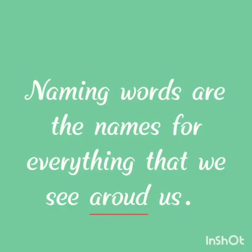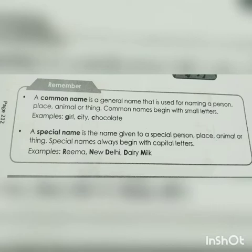Naming words are the names for everything that we see around us. Matlab, हमारे आसपास हमें जो भी चीज़ें दिखाई देती हैं, that's called naming words. देखो हमारे आजबाजे कितनी सारी चीज़ें हैं — बहुत सारे trees दिखाई देते हैं, उसको कहते हैं naming words. In that also, two types: a common name and special name.